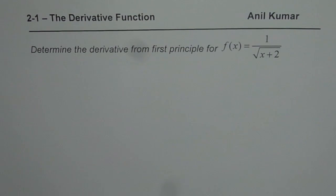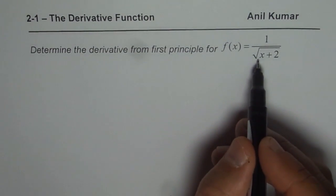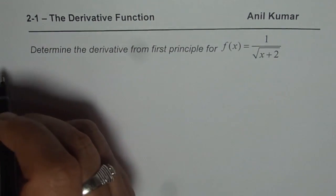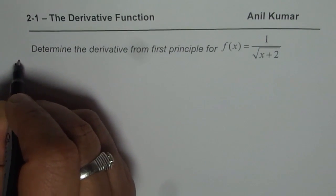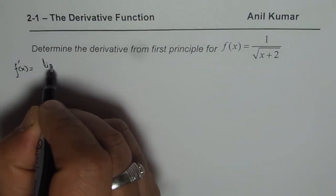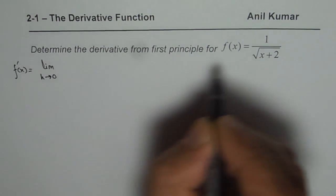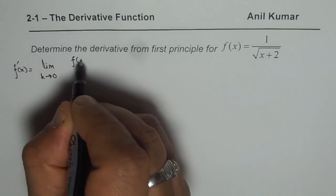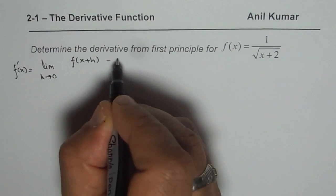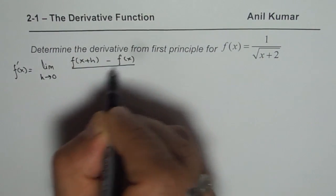I am Anil Kumar and now let us find the derivative of the given function using the first principle. The function is 1 over square root of x plus 2. The definition is f dash x is equal to limit as h approaches 0 of f of x plus h minus f of x over h.